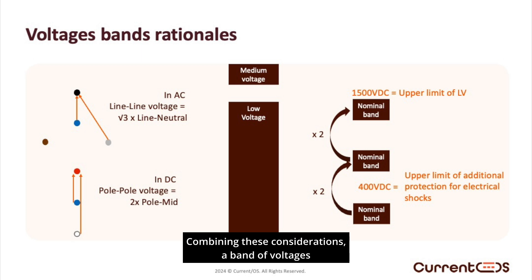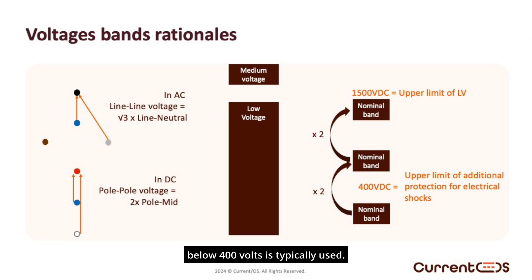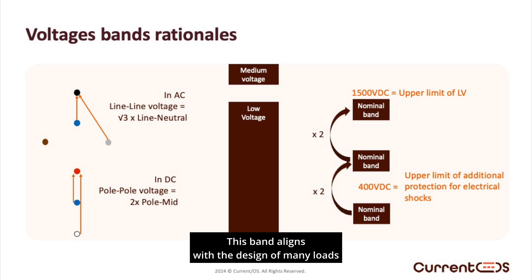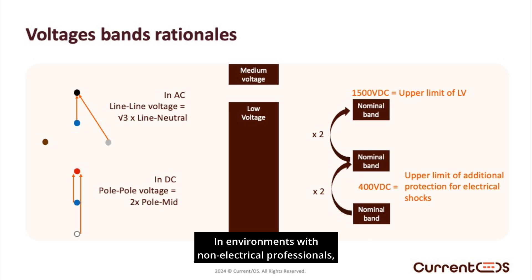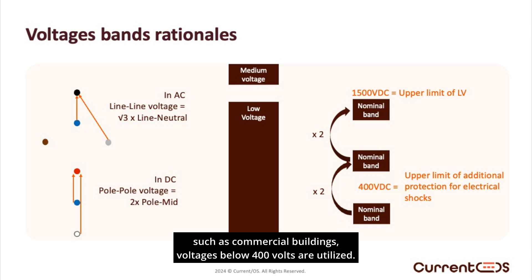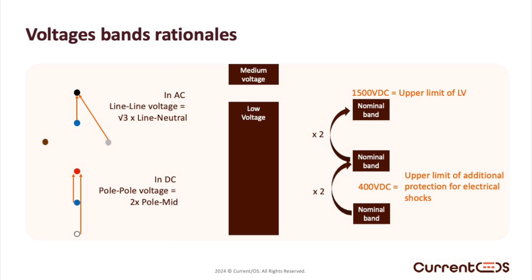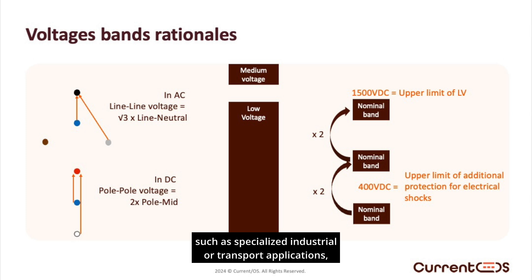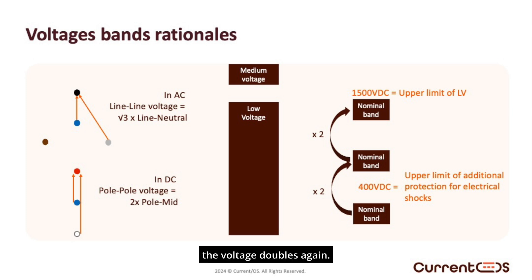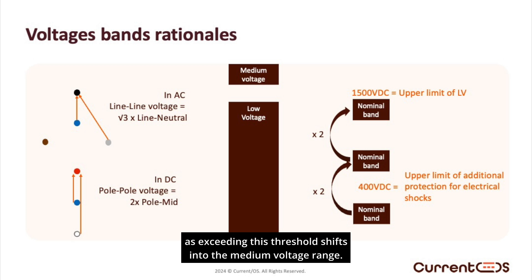Combining these considerations, a band of voltages below 400 volts is typically used. This band aligns with the design of many loads and also represents the upper safety limit for protecting people. In environments with non-electrical professionals, such as commercial buildings, voltages below 400 volts are utilized. For higher-powered applications, the voltage typically doubles. For specific cases requiring significant power, such as specialized industrial or transport applications, the voltage doubles again. However, it is crucial to stay below 1,500 volts, as exceeding this threshold shifts into the medium voltage range.